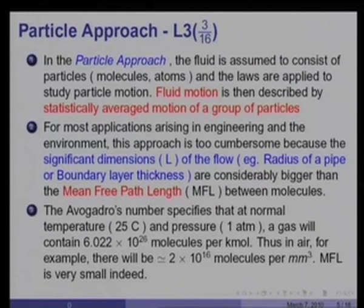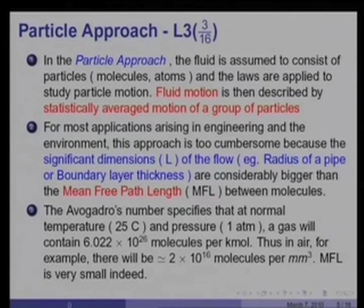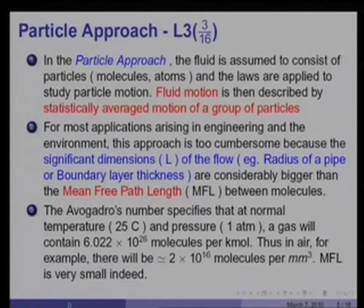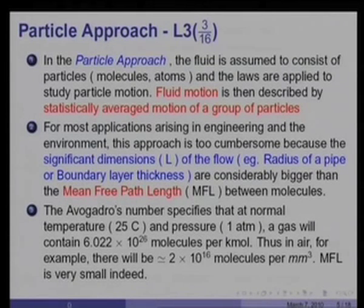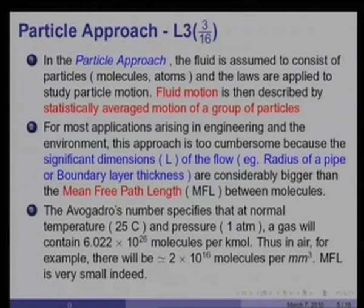To appreciate this, consider something you already know. The Avogadro's number specifies that at normal temperature of 25 degrees centigrade and pressure of 1 atmosphere, a gas will contain 6 × 10²⁶ molecules per kilo mole. For example, air which has a molecular weight of about 29 and density of about 1, it can easily be deduced that there will be 2 × 10¹⁶ molecules per millimeter cube. You can very well imagine therefore that the mean free path length between molecules must be very small, and there will be simply far too many molecules to track even in a simple 1 centimeter diameter pipe.